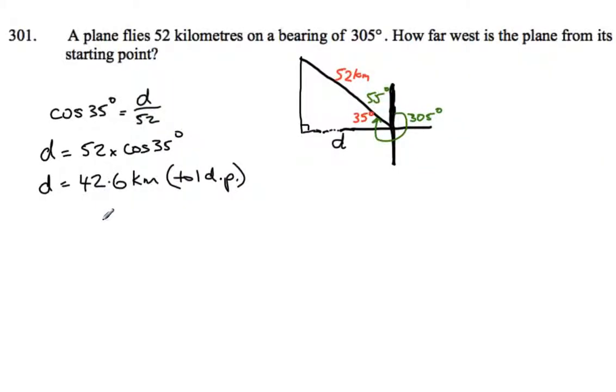And your final answer is the plane is 42.6 kilometres west from its starting point. Technically in a test I would like to see if I was marking this, the student write a sentence there. You'd say the plane is now 42.6 kilometres west of its starting point. So don't be lazy like me. Write the sentence out. If you get asked the question in a sentence form you should answer in a sentence form just to be polite and to get more marks.